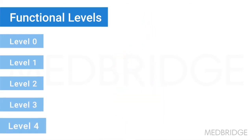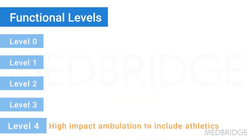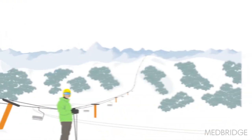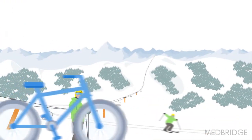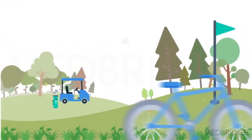Functional level 4 is high-impact ambulation, to include athletics. These are your runners, skiers, mountain bikers, road bikers, golfers, mountain climbers, and swimmers.